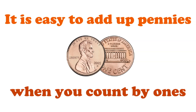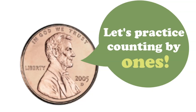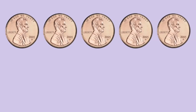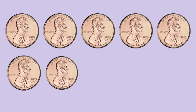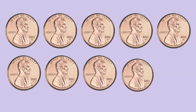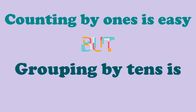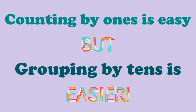It is easy to add up pennies when you count by 1s. Let's practice counting by 1s. 1, 2, 3, 4, 5, 6, 7, 8, 9, 10. Counting by 1s is easy, but grouping by 10s is easier.